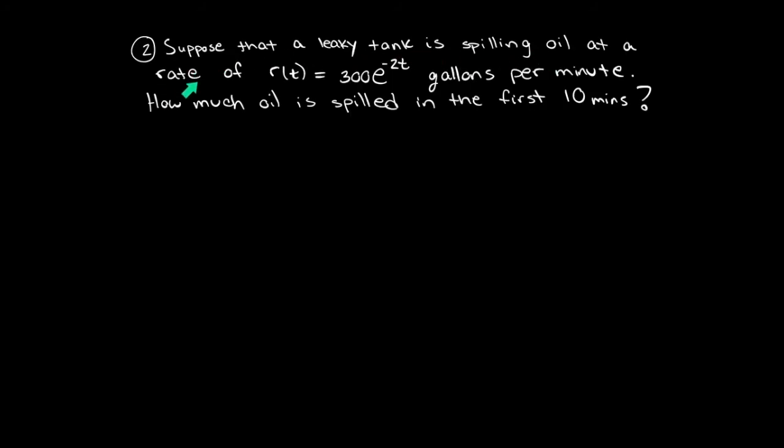Suppose that there's a tank of oil. We are told how fast it's leaking with the function 300 e to the minus 2t. Let's graph it so we can see what's going on. Remember, e to the minus x looks approximately like that. That's the general shape. Now, to get the exact points,